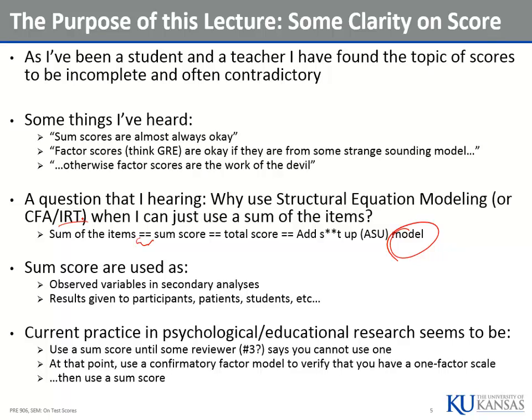I'm going to try to describe research using psychometrics in educational and psychological research — those are the two areas I know best. We use a sum score in our analysis until some reviewer says you can't use one. So then you go back to your data, run a CFA model to show there's one factor, and then use a sum score anyway. I'm not trying to pick on researchers — I'm trying to do a better job training so we can make this more understandable.